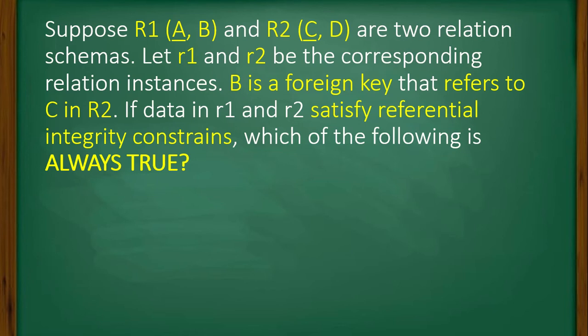That refers to C in R2. If data in r1 and r2 satisfy referential integrity constraints, then which of the following is always true?